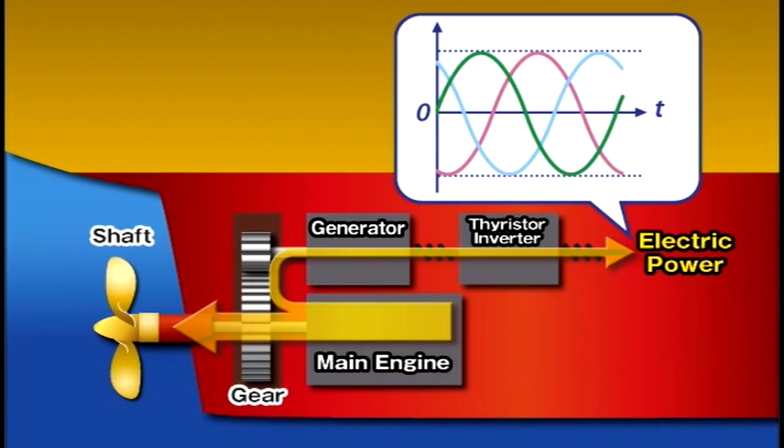In this shaft generating system, the frequency of the generating voltage remains unstable because the number of output shaft rotations varies according to ship speed. Thyristor inverters are used in shaft power generators to resolve this problem.